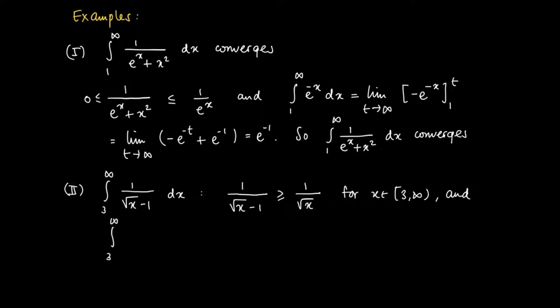Since we've been looking at the improper integrals of type 1 over x to the power alpha, we know that the integral from 3 to infinity of 1 over the square root of x dx does not converge. So here we call this one, that this is of type 1 over x to the power alpha with alpha smaller than 1. And so this one is divergent.